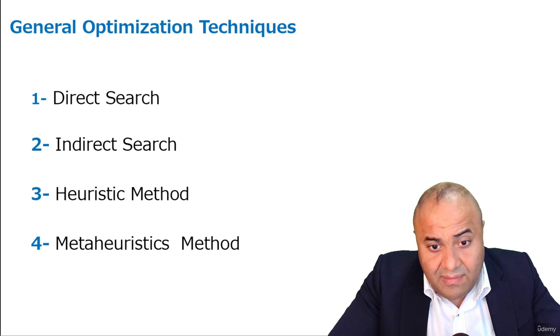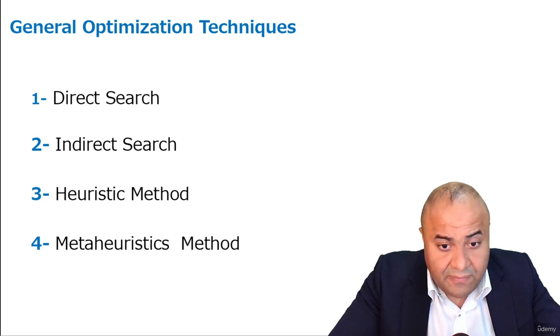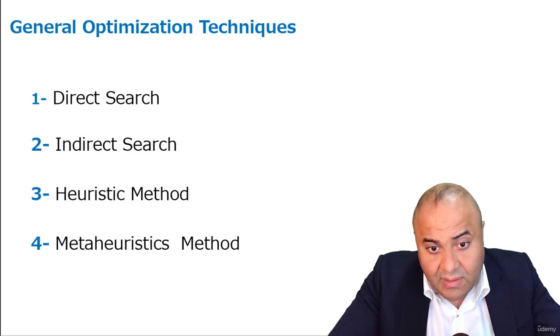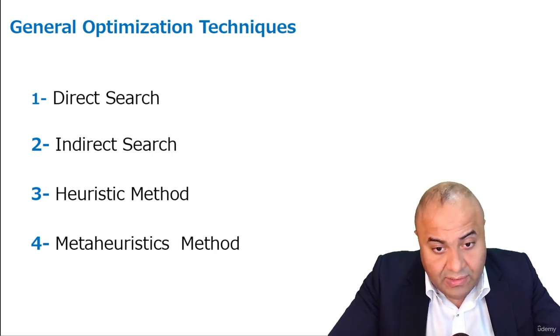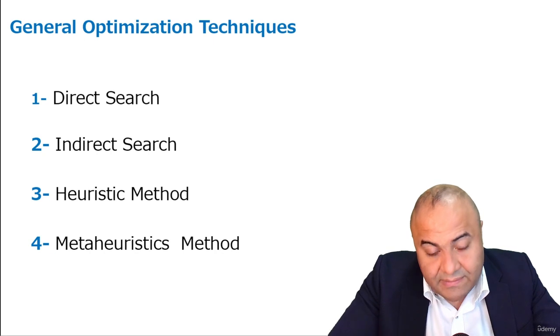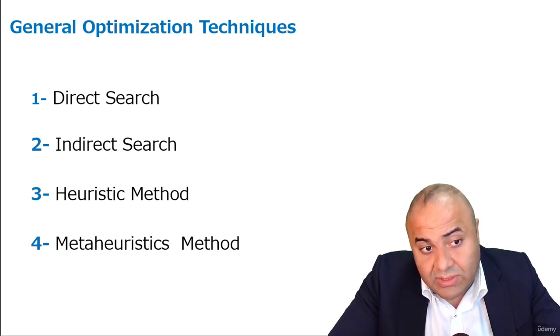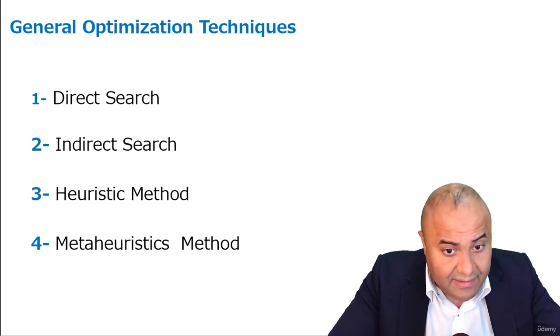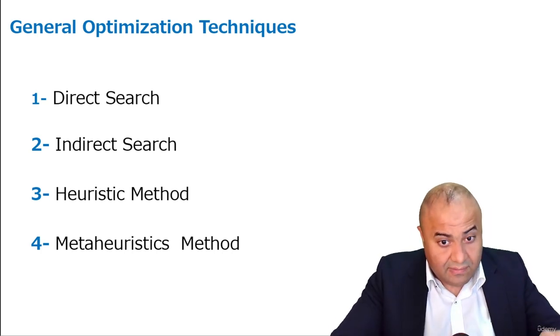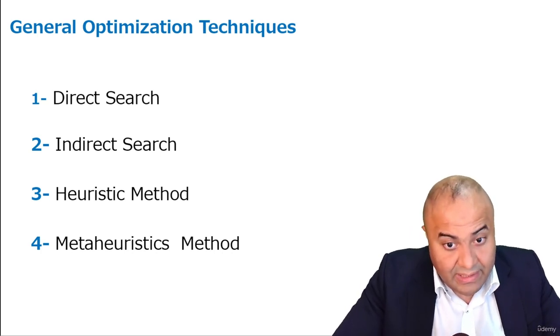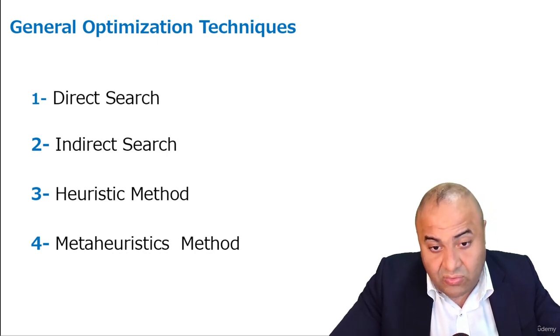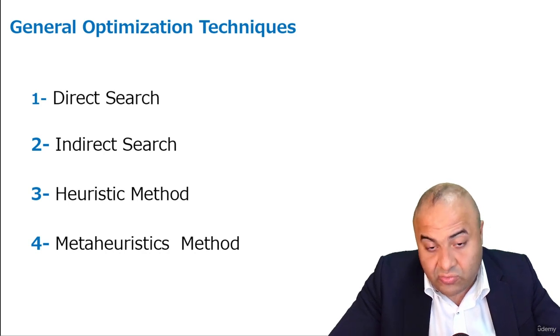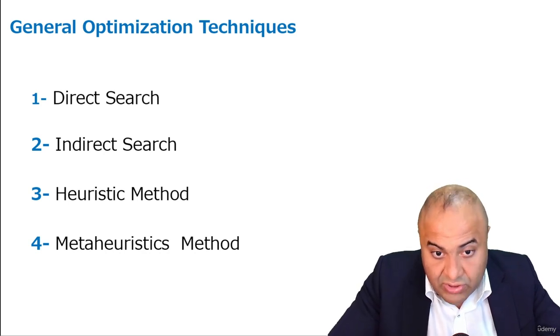There are many methods to perform optimization. In this lecture, we're going to separate them into four different methods or categories, in which the first two are going to search through a wide value area and pretty much don't require us to code our problem into the actual optimization solution procedure or method itself.